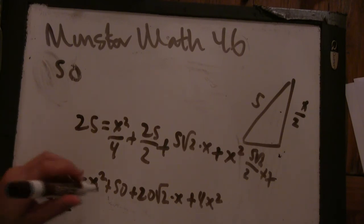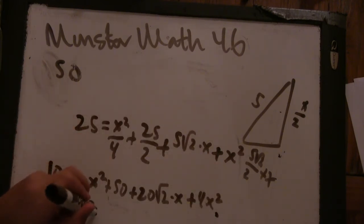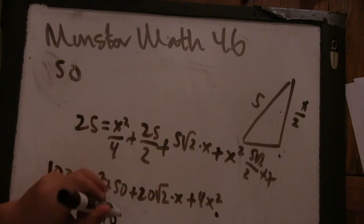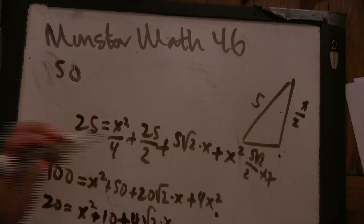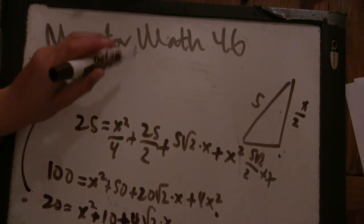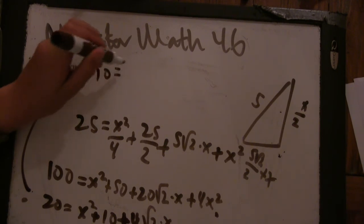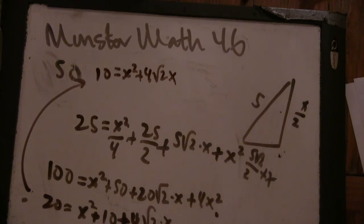So 20 is X squared, so we've got 5X squared plus 10 plus, oh I see, 4 root 2 X. Well, this says that 10 is X squared plus 4 root 2 X. Okay. Can you see what X is from this?